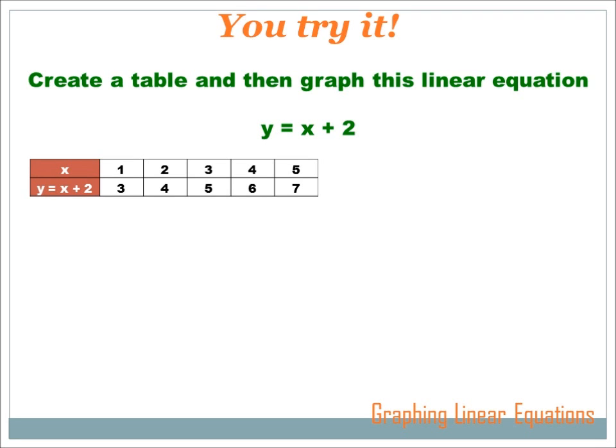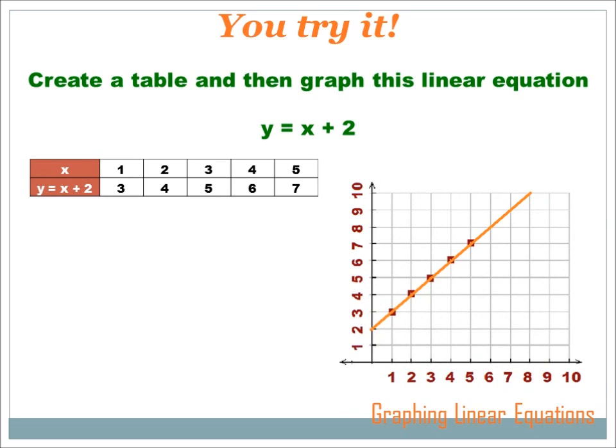Now, we need to graph this relationship. I've created a graph that has x values one through ten and y values one through ten. For each x value, I find out where the corresponding y value is and I put a dot there. So my first one is one and three, so I go out to one and then I go up three and I put a dot right there. My second value is two and four, so I go over two and up four. I do that for all the values I've got, and I end up with those five dots. And then I need to draw a line through them.